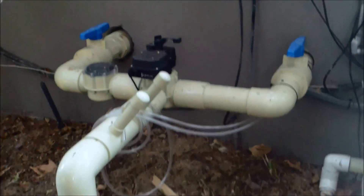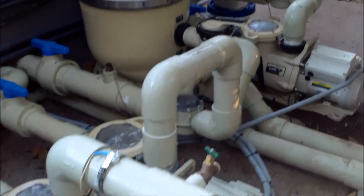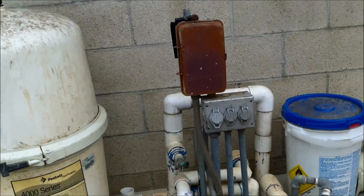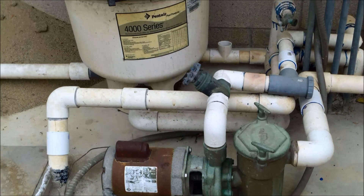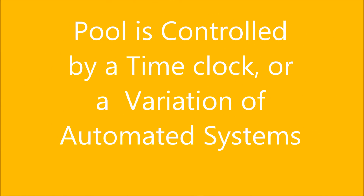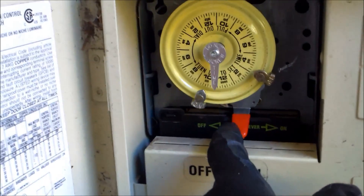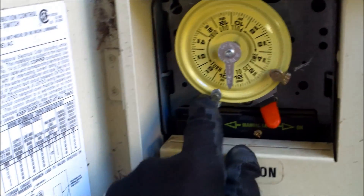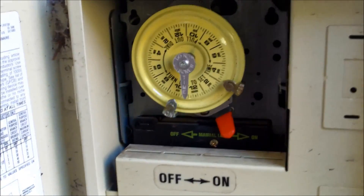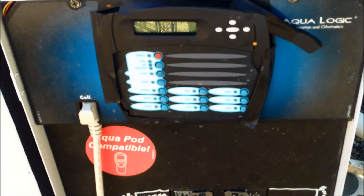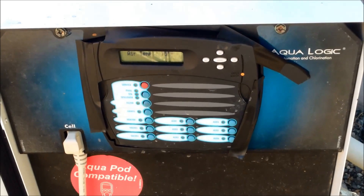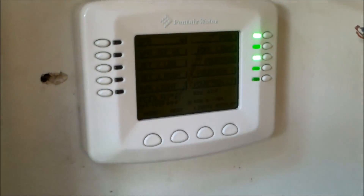Pool equipment can range from the complicated, like this setup here, or you might just have a simple set — a pump, a filter, and just a regular time clock. It varies from pool to pool. If you don't have an automated system, you need to have a basic time clock like this Intermatic one here, which controls how many hours the pool runs. You have an on tab and an off tab, and the timer turns on the pool automatically and turns it off. Here's a typical control panel for an automated system.